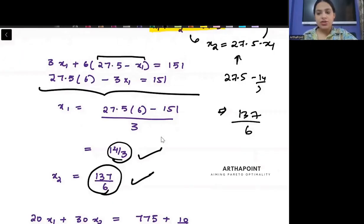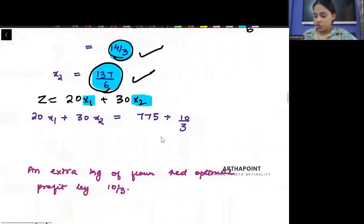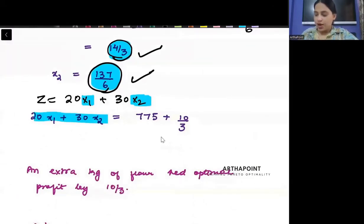But what was your objective function? Kya tha objective function? It was z is equal to 20x1 plus 30x2. I have already got new x1, x2 yaha pe. 14 by 3 and 137 by 6. When you will put 14 by 3 here and 137 by 6 here, you will get the new objective function. Ka jo value hai ba. Wo hai ga 775 plus 10 by 3. In other words, aapka jo new objective function ka value hai ga na, beeta. That will come down as 778.34.